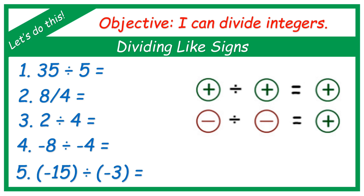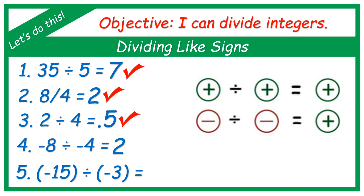So let's try to answer: 35 divided by 5 — the answer is positive 7. 8 divided by 4 — positive 2. 2 divided by 4 — that gives you a decimal, positive 0.5. Negative 8 divided by negative 4 — positive 2. And negative 15 divided by negative 3 — the answer is positive 3. Easy, right?